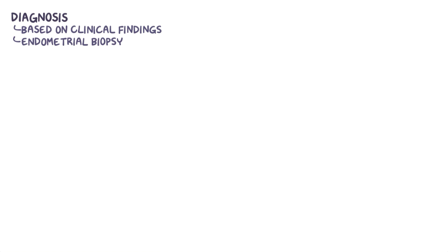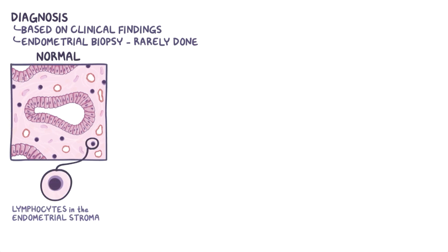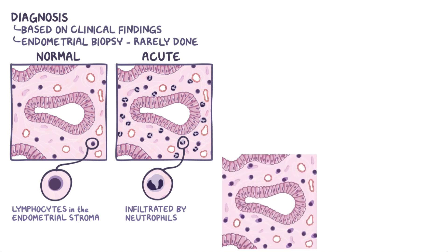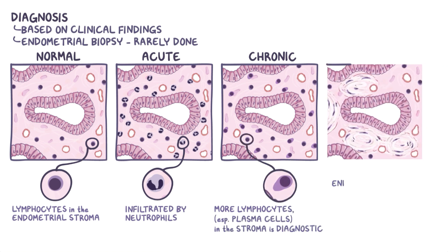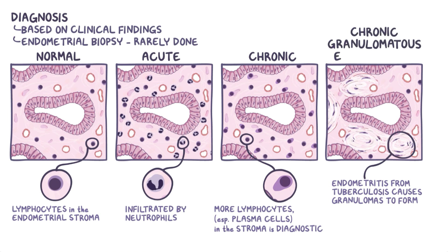Diagnosis of endometritis is usually based on clinical findings. However, an endometrial biopsy can help make the diagnosis, but it's not routinely done. Under the microscope, the normal endometrium sometimes has lymphocytes in the endometrial stroma. In acute endometritis, the endometrium is infiltrated by neutrophils, which are the hallmark cells of acute inflammation. In chronic endometritis, the presence of more lymphocytes, especially plasma cells, in the endometrium is diagnostic. When endometritis is caused by tuberculosis, an additional finding is the presence of granulomas in the endometrium, which is why it's also called chronic granulomatous endometritis.